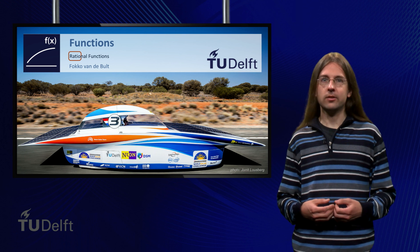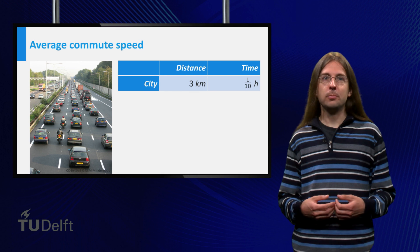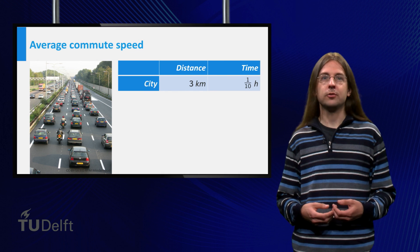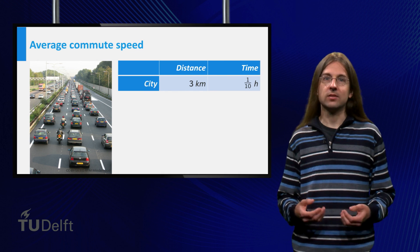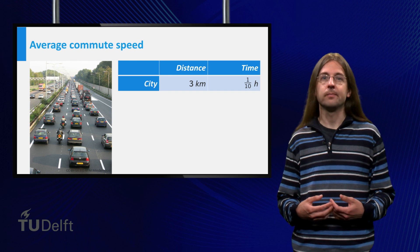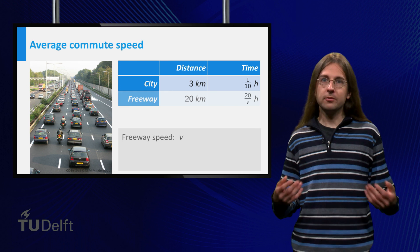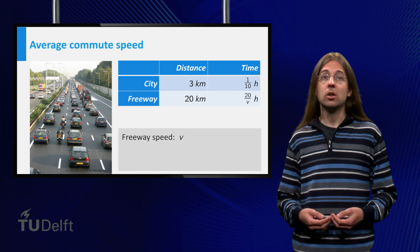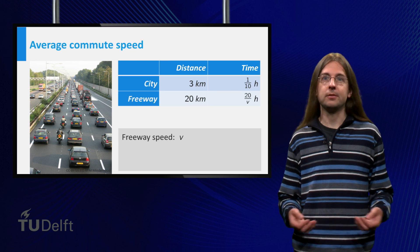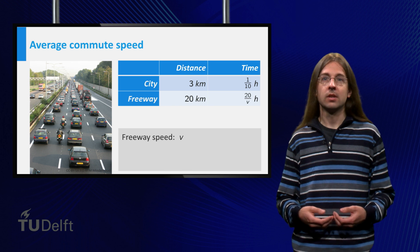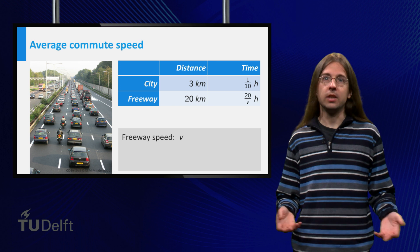Let us look at an example. Suppose my trip to work involves 3 km of city traffic, which always takes me 6 minutes, which is 1 tenth of an hour. Subsequently I have to drive 20 km on the freeway with a speed v, which depends on the amount of traffic. Thus, the time on the freeway is 20 km over v.